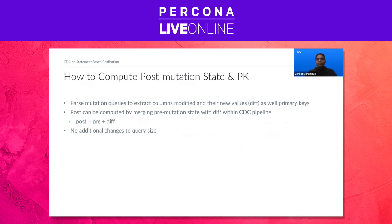With this background of what Credence supports, let's see how we compute post-mutation state and primary key. Given how clients construct queries, all the columns that change and their new values — also known as diff — are present in the mutation query. We can extract that information by parsing the query, and we can also extract primary keys from parsing queries as well. If we take the pre-mutation state from query comments and add the diff to it, that gives us the post-mutation state. Since we are extracting diff from queries, there is no additional change to query size, unlike pre-mutation.